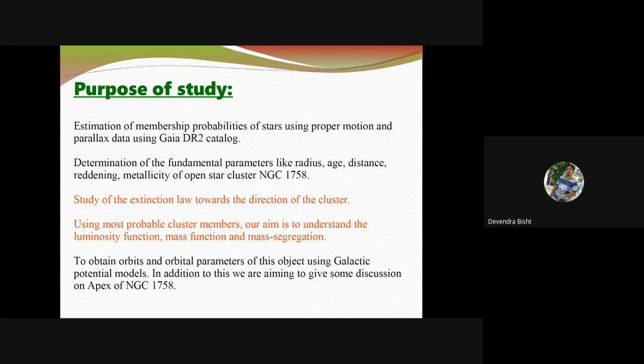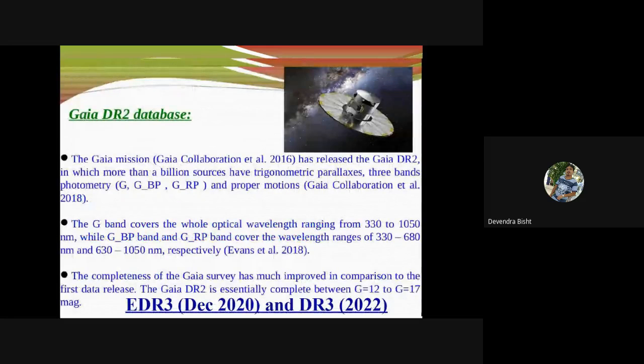For that we have used the Gaia DR2 database. The second data release of the Gaia mission contains 1.7 billion sources and was made public on 2018 April 24. This Gaia mission contains parallaxes and three-band photometry G, GBP, GRP and proper motions. The G-band covers the whole optical range from 330 to 1050 nanometers, while GBP and GRP bands cover 330 to 680 and 630 to 1050 nanometers.